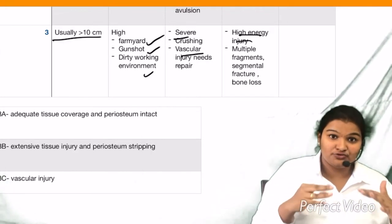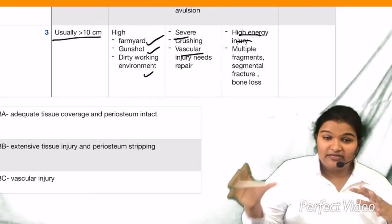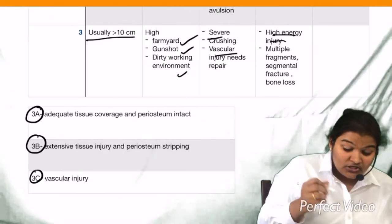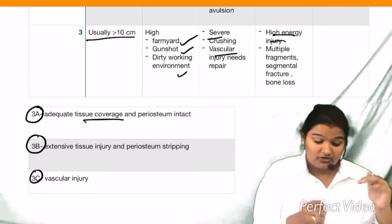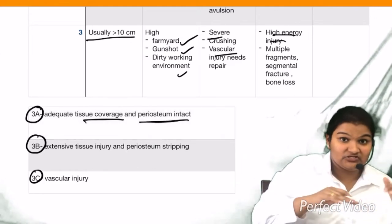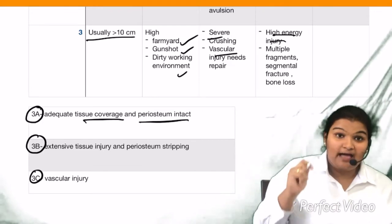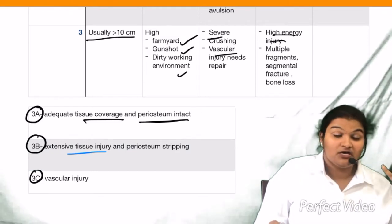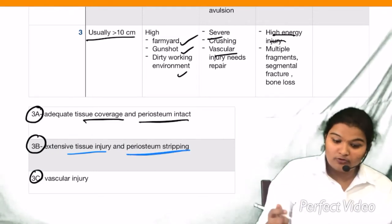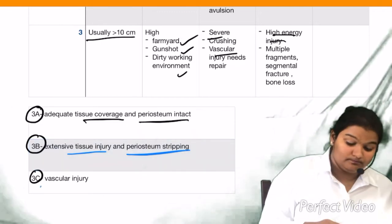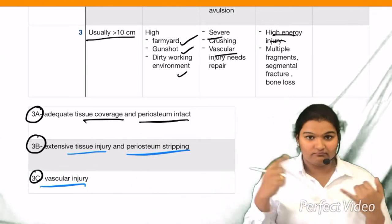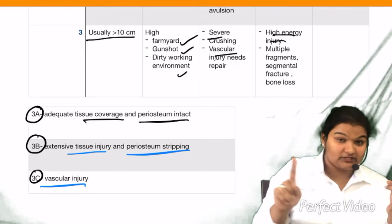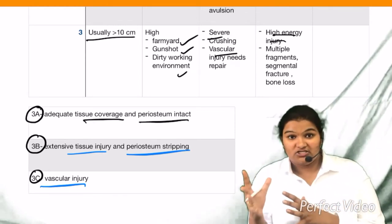On the basis of soft tissue level and periosteum, type 3 is further divided into 3A, 3B, and 3C. In type 3A, soft tissue coverage is adequate and the periosteum is intact with no loss or stripping. In type 3B, there is extensive tissue injury, vascular injuries, blood loss, soft tissue loss, even bone loss, and the periosteum is stripped. In type 3C, there is loss of periosteum, tremendous loss of soft tissue, ischemia, and vascular injuries.